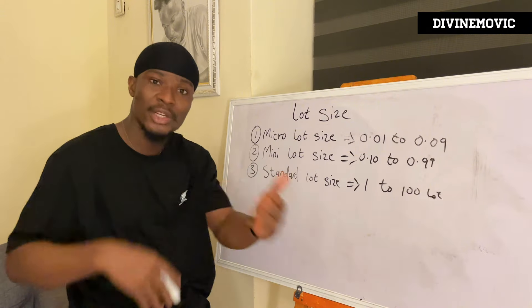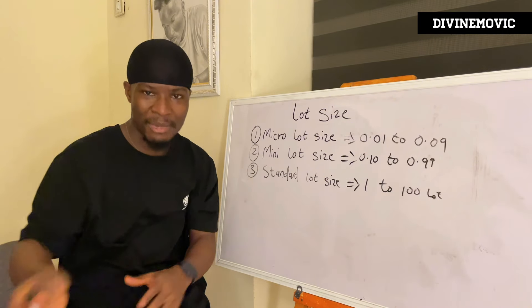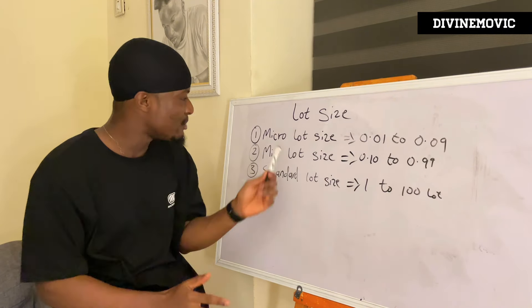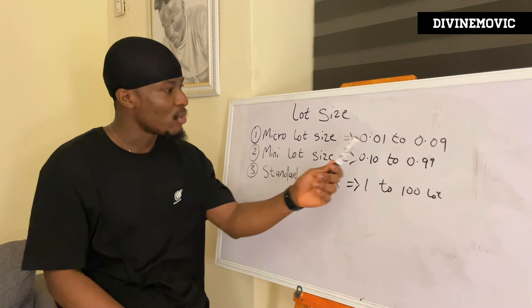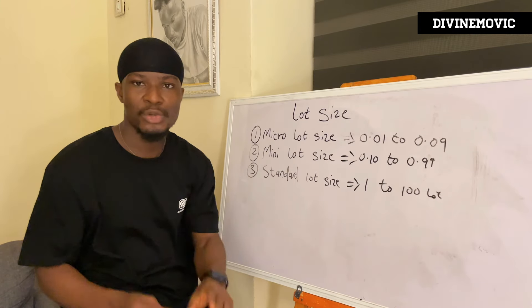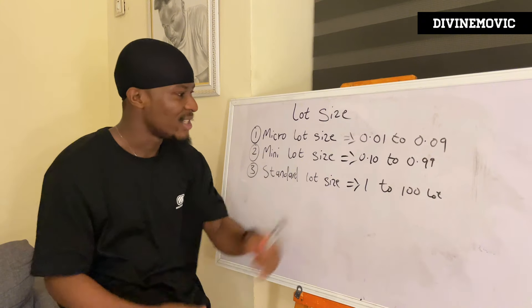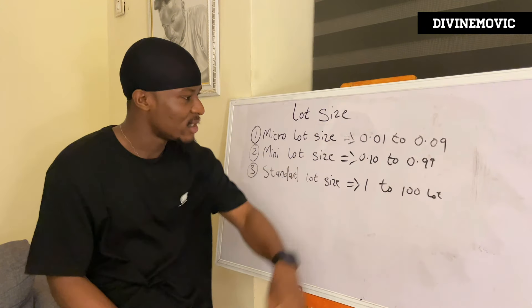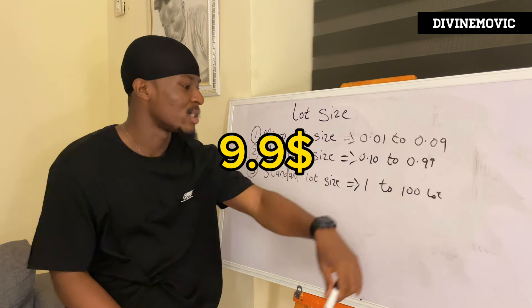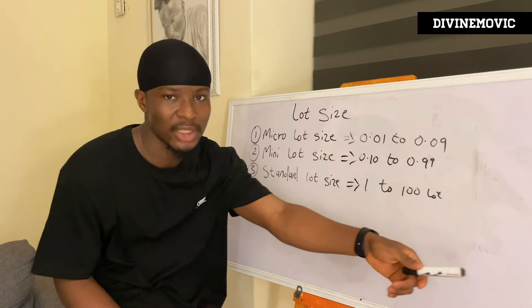So it can be 1, 2, 3, 4, 5, 20 — all of these fall under the standard lot size. We have the micro lot size which is 0.01 to 0.09 — they are worth in cents. The mini lot size is worth from $1 to $9. And the standard lot size is worth from $10 up to even $8,000.